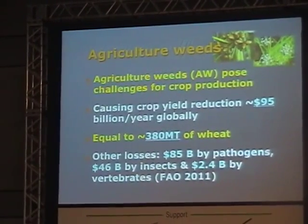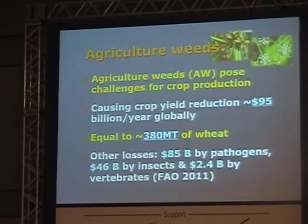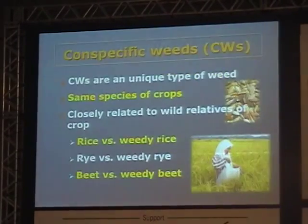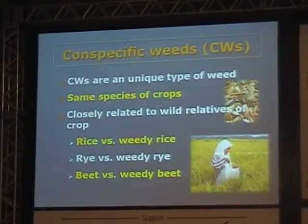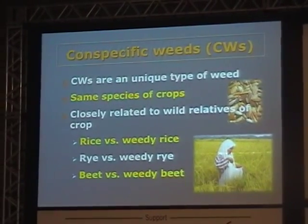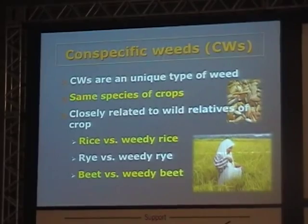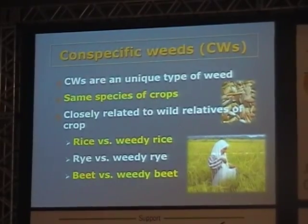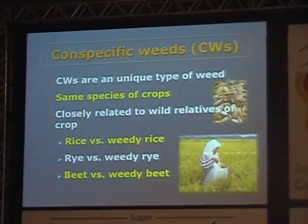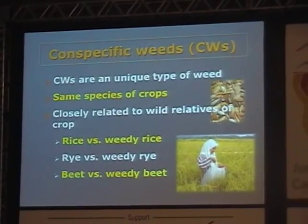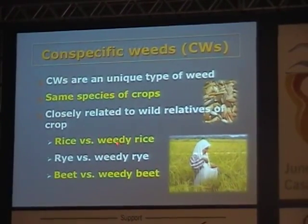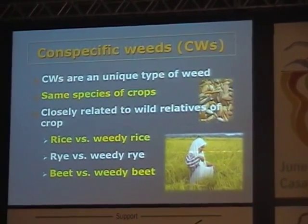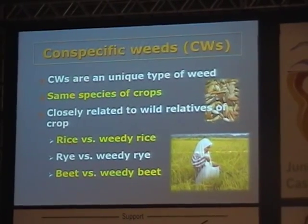Weeds are a challenge because they have a very smart way to live in human-managed systems. I'd like to use a special weed we call conspecific weed — meaning the weed is the same species as the cultivated crop, and it shares a very close genetic relationship with the wild derivatives of the crop. For example, weedy rice occurs in the rice field, and weedy rye occurs in the rye field.